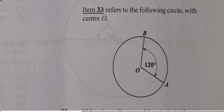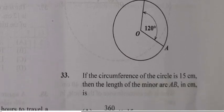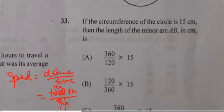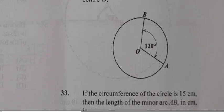Question 33 says the circumference of the circle is 15 centimeters. The distance going around the circle in one revolution is 15 centimeters. Then the length of minor arc AB is what? So you want to find...